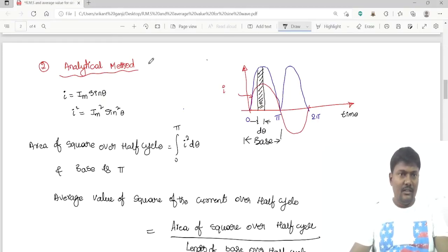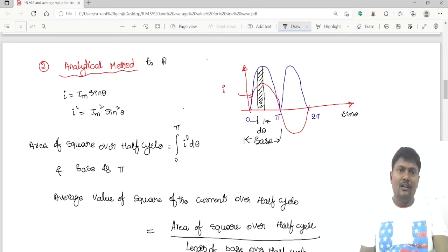Coming to the analytical method to find out the RMS value, this red line is a current waveform where I is equal to I_m sine theta. I square is positive, and the negative half cycle is converted into positive half cycle. I am taking this small portion theta.